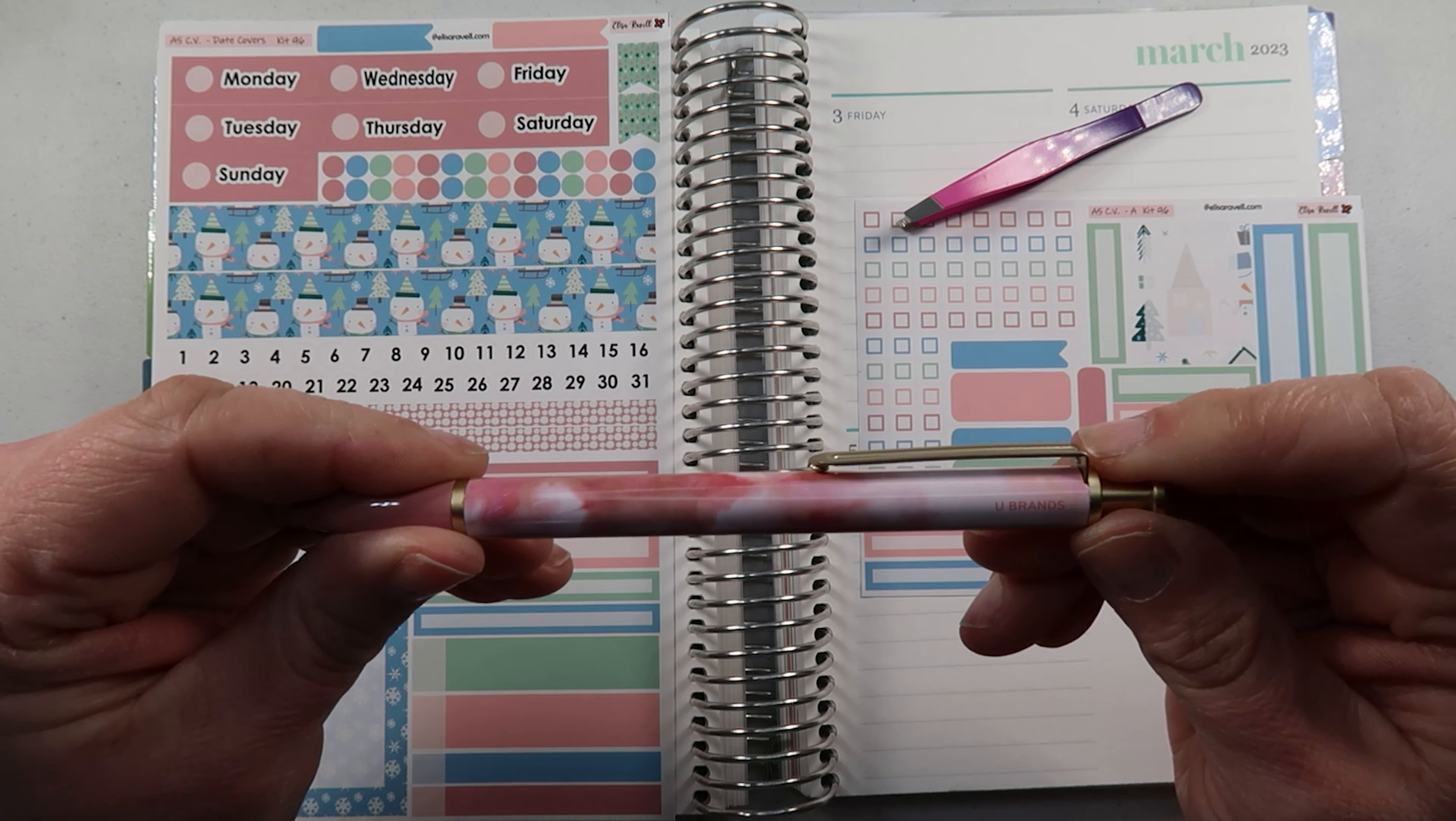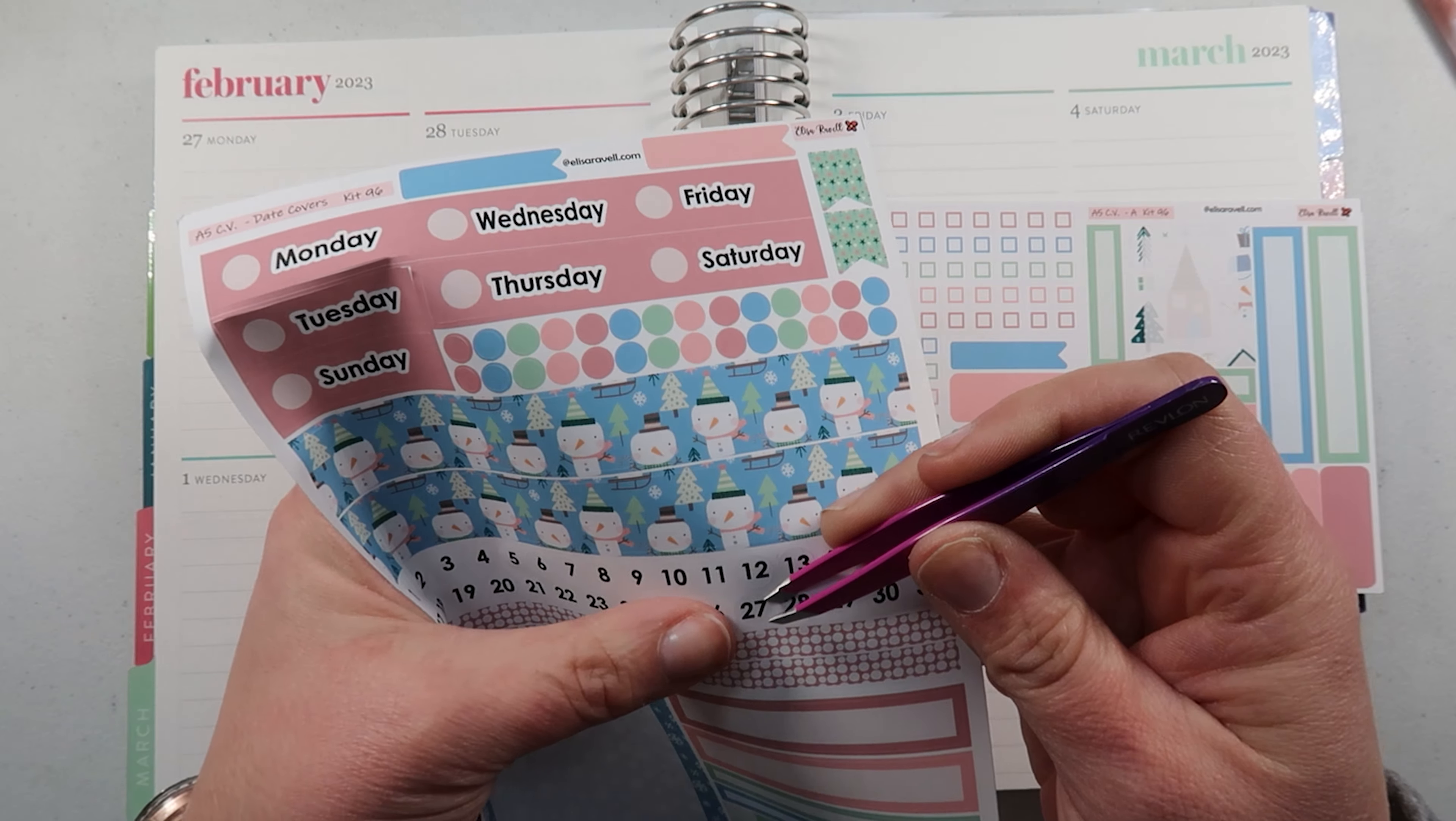I figured I better use this kit before it's not going to be snowy anymore. This is going to be from February 27th through March 5th. Let's date this up, let's grab some date dots here.